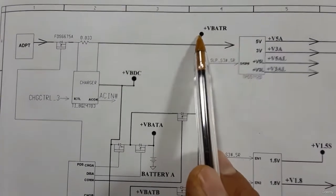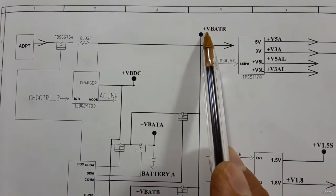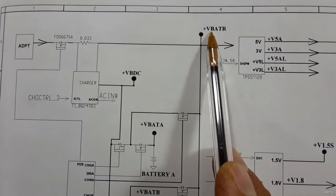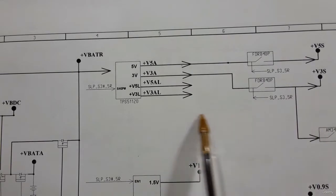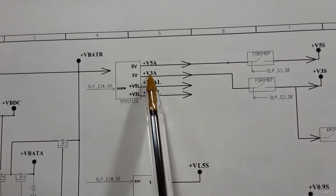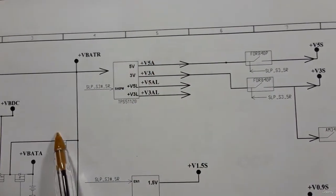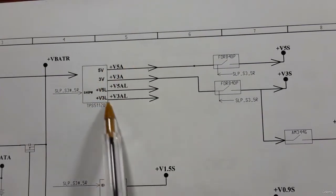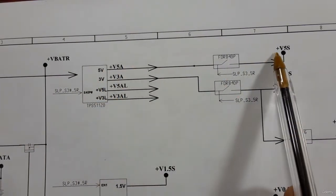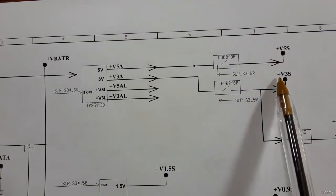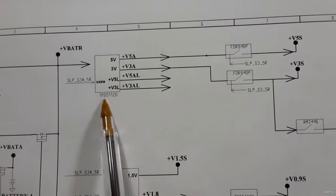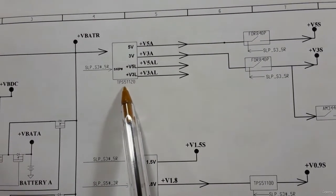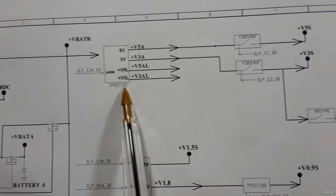V_bat is distributed to the whole motherboard, to every circuit. Here we get V_bat at 19 volts, which is applied to this 3-volt and 5-volt circuit. This circuit will generate plus 5 volts and plus 3 volts.